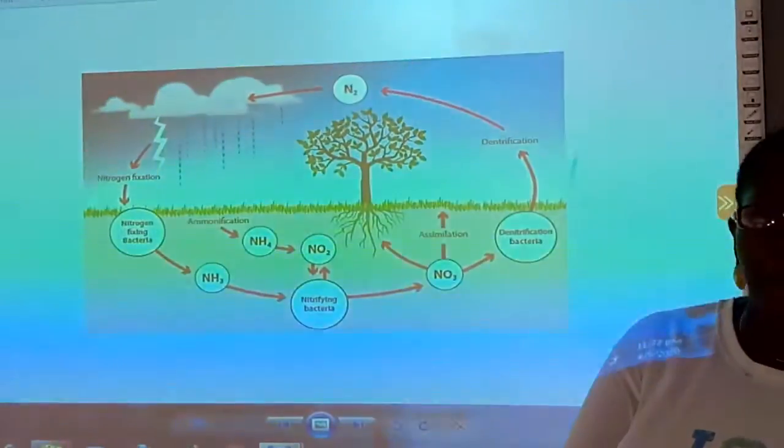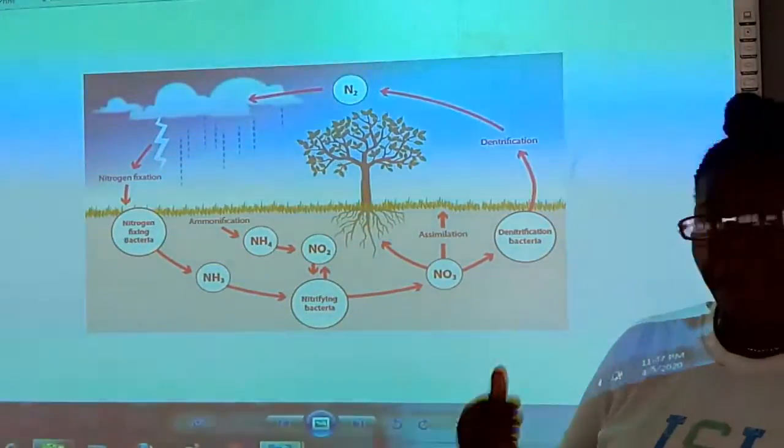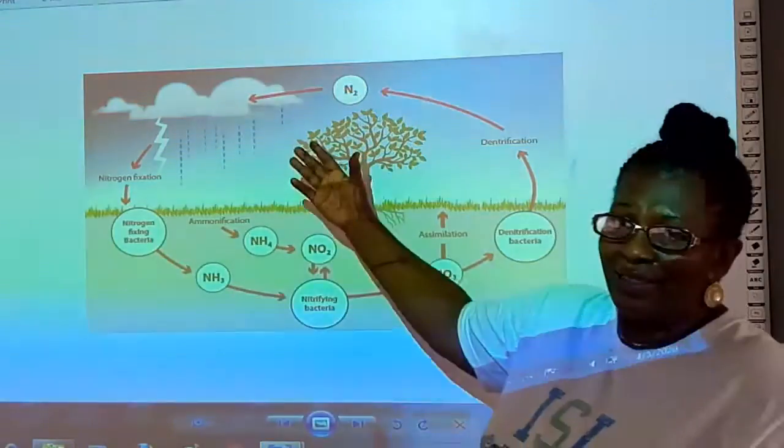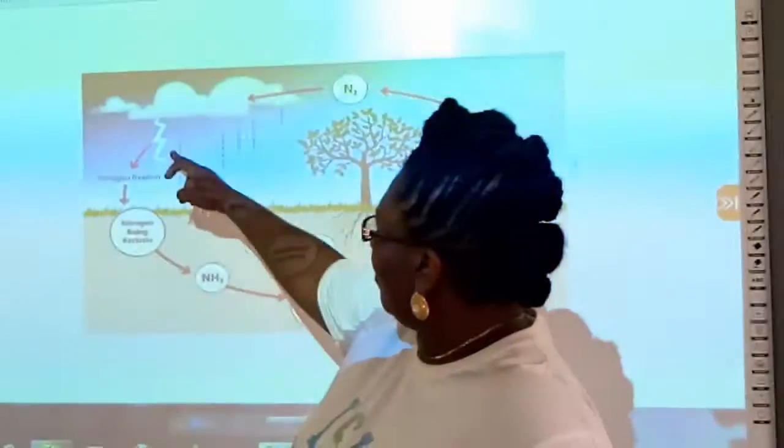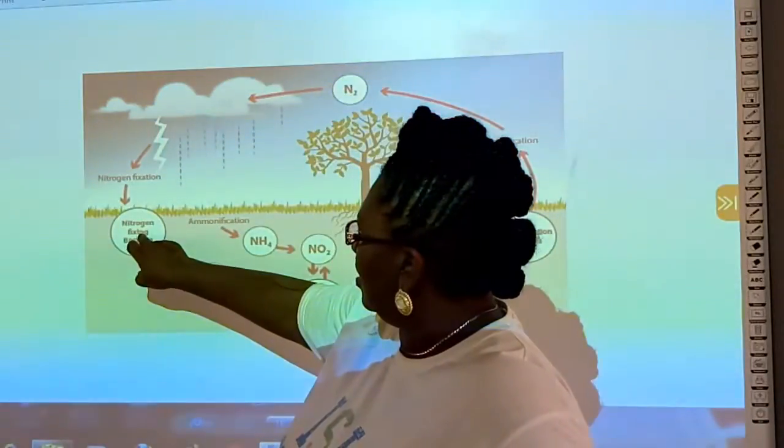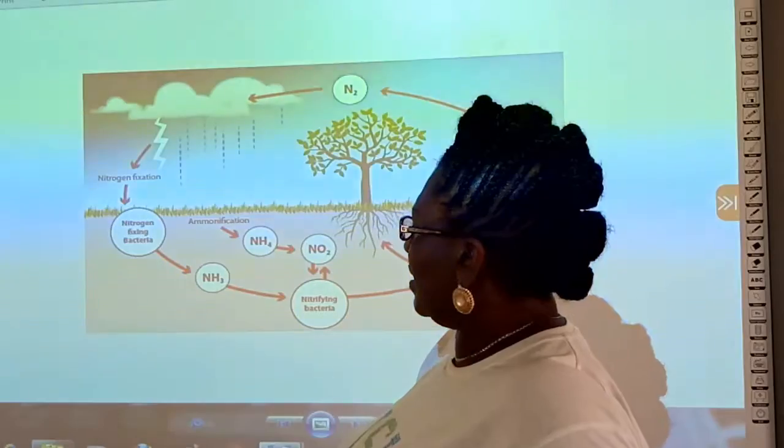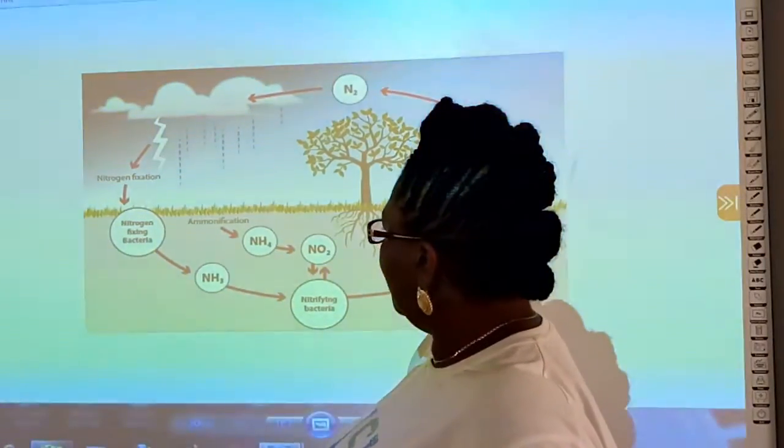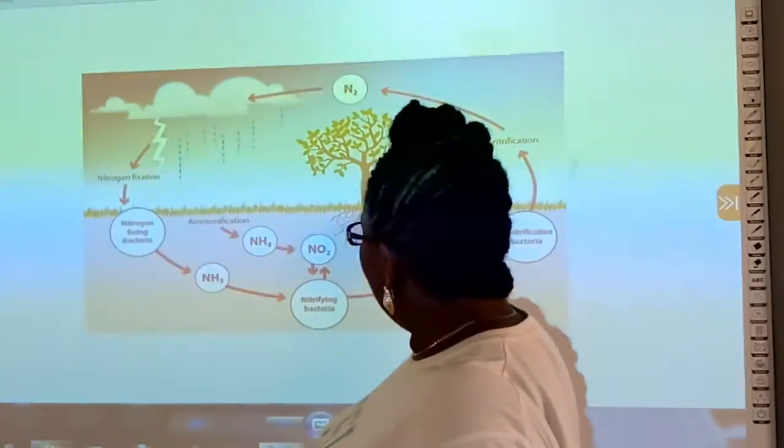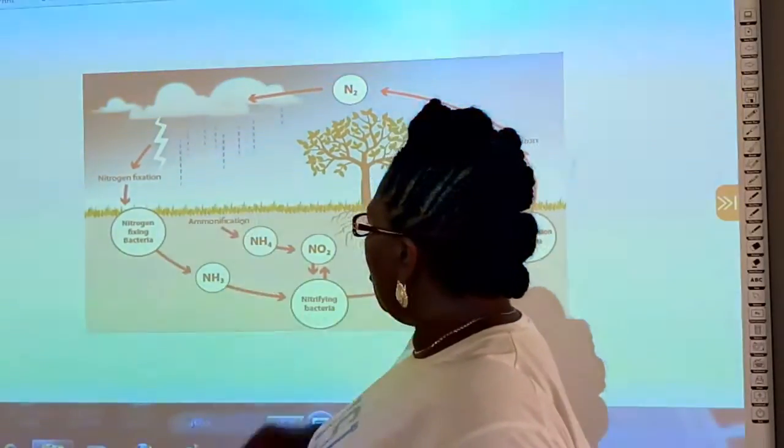So, if you look at the screen, you have nitrogen fixation. Nitrogen fixing bacteria helps to get it in there. And then you have the breakdown of these, which we call the ammonification.